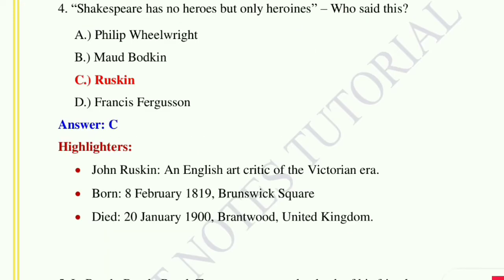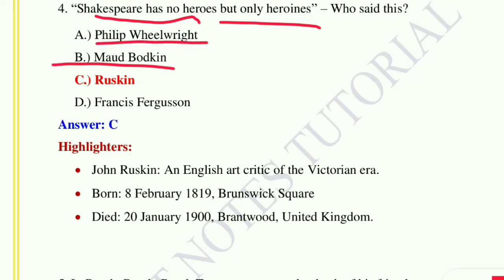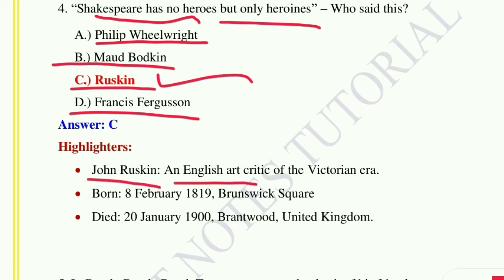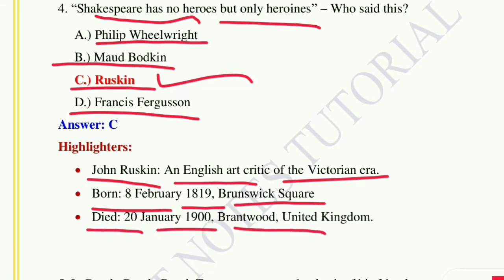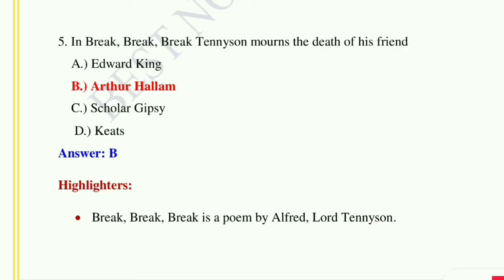Question number four: 'Shakespeare has no heroes but only heroines' — who said this? Option A: Philip, option B: Mudkin, option C: Ruskin, option D: Francis Ferguson. The correct answer is option C, John Ruskin. John Ruskin was an English art critic of the Victorian age, born on 8th February 1819 at Brunswick Square, and he died on 20th January 1900 at Brantwood, United Kingdom.